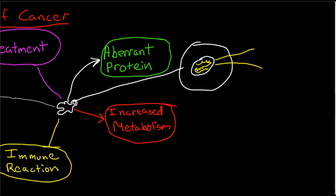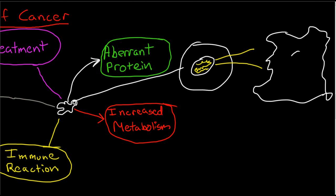Over time, mutations can continue to build up in cancer cells. When you have an advanced cancer, you can have cells that look very unusual because on the inside they have tens of thousands of mutations. For example, a study on small cell lung cancer found that a typical small cell lung cancer cell has about 50,000 mutations within it.